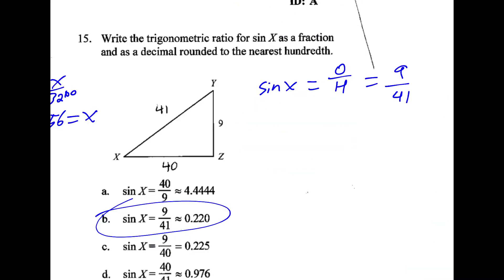For 15, this one involves sine because we're looking at the opposite over the hypotenuse. And that is 9 over 41.